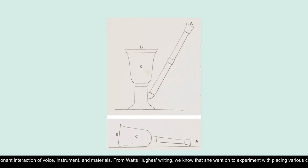From Watts Hughes' writing, we know that she went on to experiment with placing various consistencies of pastes and liquids on the instrument as a way of introducing binding mediums to fix the figures she made, resulting in a series of figures that both resembled and were named after flowers. These images were produced by placing the eidophone's diaphragm face up. The figure would then be sung into existence, and the glass plate then placed on top to capture it.